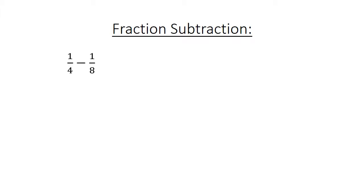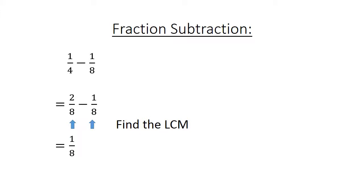Fraction subtraction: 1 over 4 minus 1 over 8. Find the lowest common multiple: 2 over 8 minus 1 over 8 equals 1 over 8.